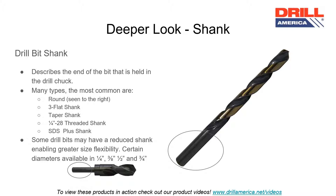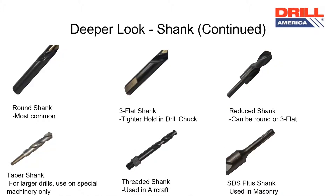Reduced shank drill bits can have a ¼ inch, 3/8 inch, ½ inch, or a ¾ inch shank. Here are some pictures of the different shanks. The round shank is the most common shank and is available with most of our drill bits. The 3-flat shank comes with some reduced shank drill bits and mechanics length drills.